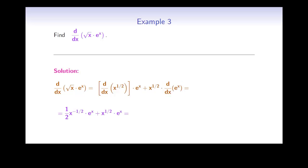So overall we get 1/2 times x to the negative 1/2 times e to the x, plus x to the 1/2 times e to the x. This expression can be written as e to the x over 2 root x, plus e to the x times root x. And we can even factor e to the x from each term and get e to the x times 1 over 2 root x, plus root x.